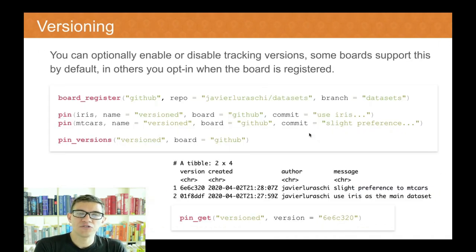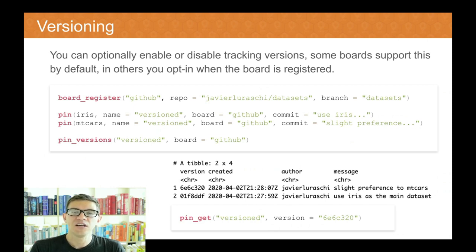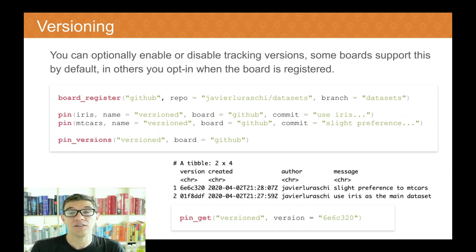There are a few other efficient features worth mentioning. The first is that you can support multiple versions. If you're familiar with GitHub, you already expect the pins package to allow you to retrieve previous versions. But you can also use versioning with boards like S3, RStudio Connect, Kaggle, and others. Some, like the cloud boards, require you to opt in since it comes with additional costs to store multiple versions. Nevertheless, versioning is supported in all the boards that the pins package supports.